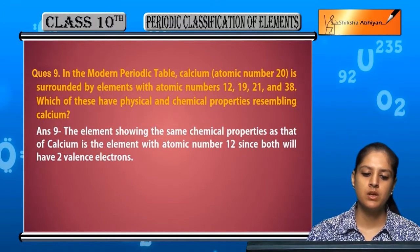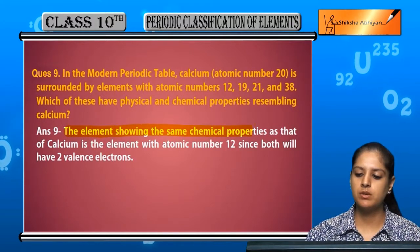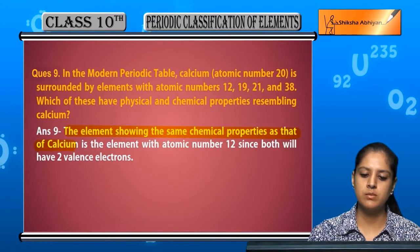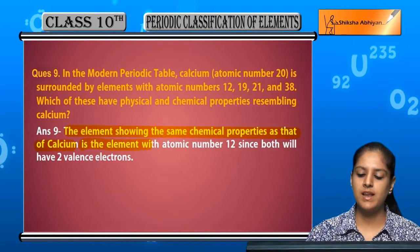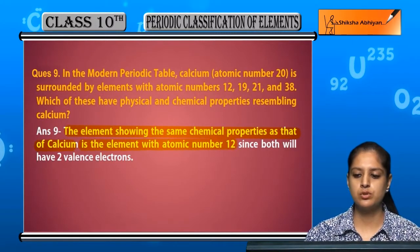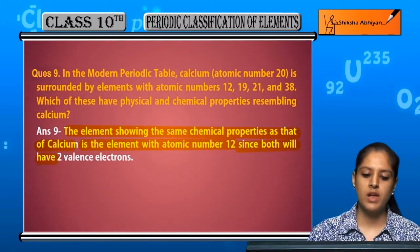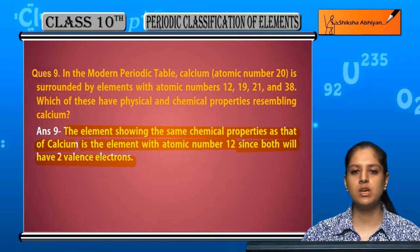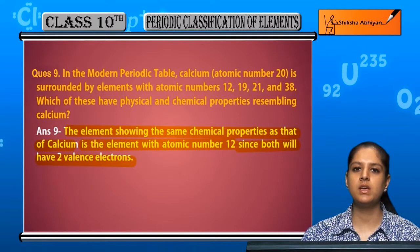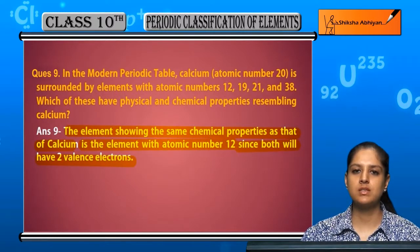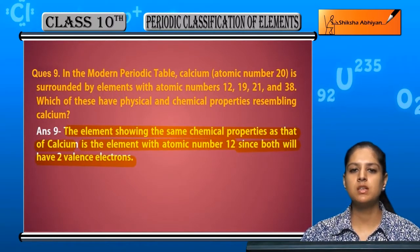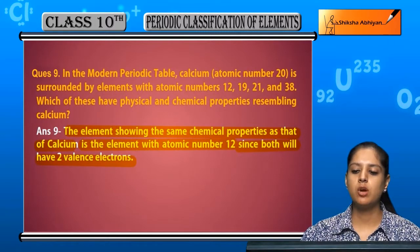The element showing the same chemical properties as calcium is the element with atomic number 12. Both have two valence electrons, so their properties are the same. Therefore, atomic number 12 has properties similar to calcium.